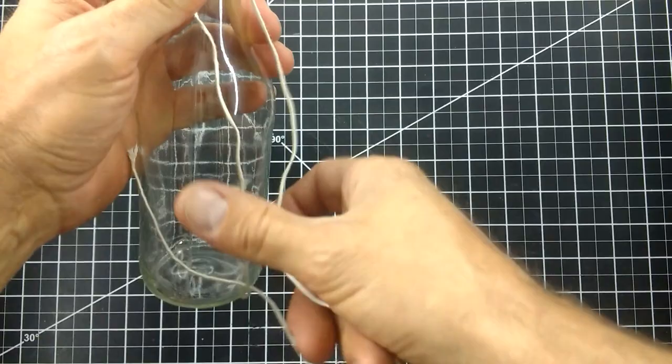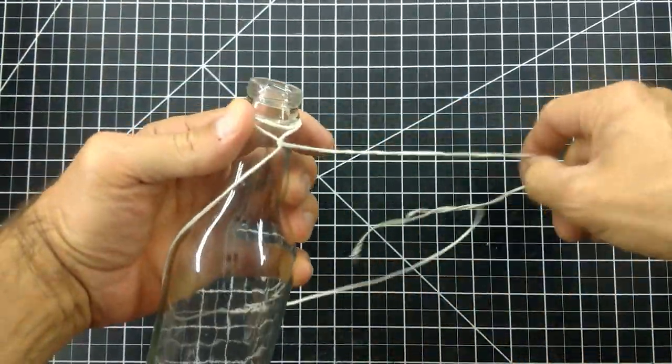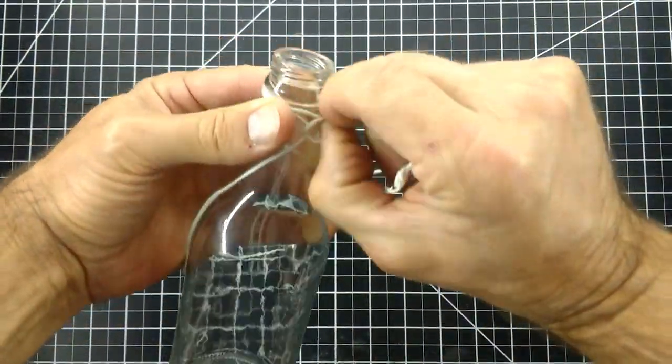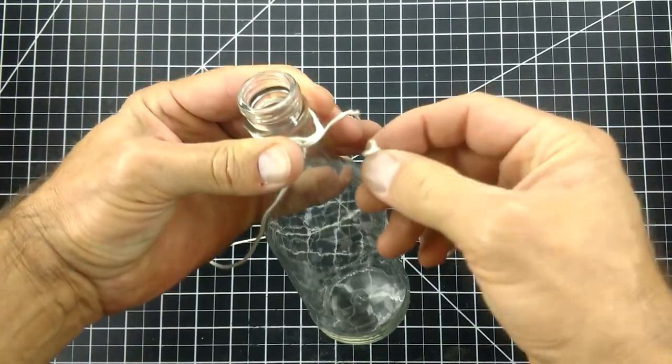Wrap one end of the string around the other. Now, I wrap that string around the loops three times, still keeping the string loose as I wrap it.